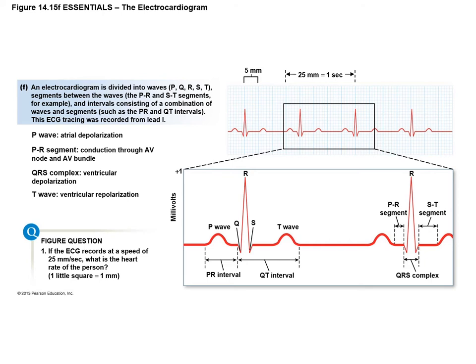Finally, there's the T wave, which represents ventricular repolarization. Notice it's the same direction as depolarization. This is because when it repolarizes, it does so in the opposite direction that it was depolarized. Ventricular depolarization goes from the tip of the heart — the apex — up towards the base, while repolarization goes from the base towards the apex. Because of this, the wave appears positive because it's going backwards — hence why it's reversed. There are some diseases that cause this wave to go in the opposite direction, like cardiac ischemia, which reverses the direction of the T wave.